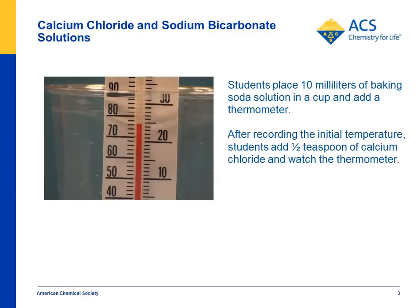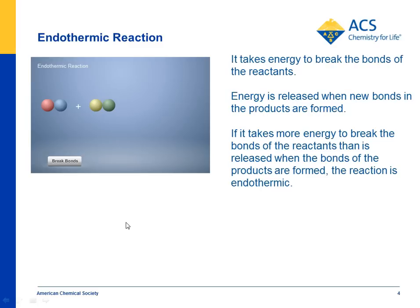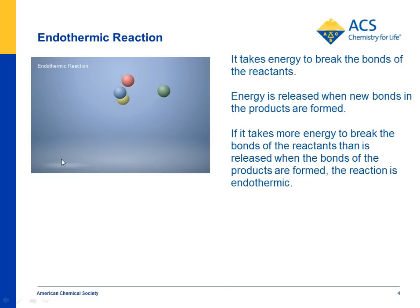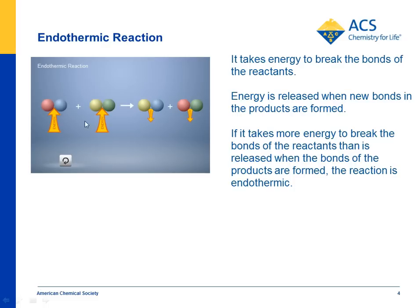The question is: why does the temperature change at all in a chemical reaction? Students are shown an idealized generic endothermic reaction, like the one with vinegar and baking soda. The reactant molecules have atoms bonded together, and it takes energy to break those bonds so atoms can rearrange and rebond to make the products. Some energy is released when bonds form, but in an endothermic reaction, more energy went into breaking the bonds than was released when the bonds were formed.